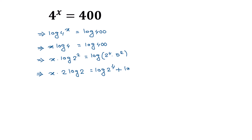So log of 2 to the power 4 plus log of 5 squared. The left side gives x times 2 log of 2. On the right side, applying the power rule, log of 2 to the power 4 becomes 4 times log of 2, and log of 5 squared becomes 2 times log of 5.